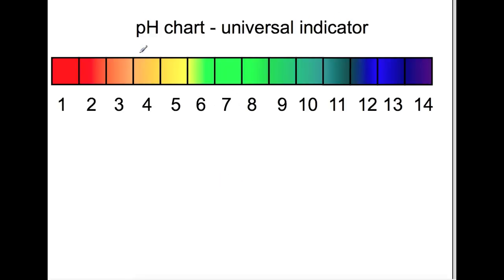Having a look here at the pH chart, which you should be familiar with, it runs from just below 1 to just above 14, but we usually just look at the 1 to 14 part of the pH chart. The colors shown here are those for universal indicator. Below pH 7, so pH 1 to 6, we have acids. At pH 7 it is neutral, and above pH 7 we have alkalis.